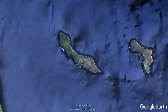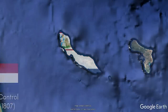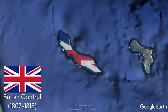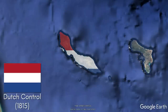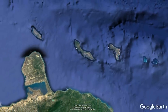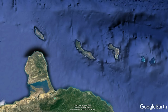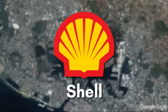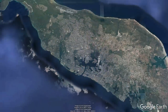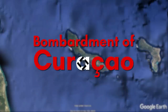Curaçao experienced 15 years of instability: captured by the British as a protectorate in 1800, briefly returned to Dutch control in 1802, captured again by the British in 1807, and finally returned to the Dutch in 1815 under the Treaty of Paris. 68 years after the slave revolt of 1795, slavery was abolished on Curaçao in 1863. Despite the economic downturn following this, the economy gained momentum after the discovery of oil in Venezuela, which Curaçao played a part in refining. Royal Dutch Shell constructed an oil refinery on the island in 1915.